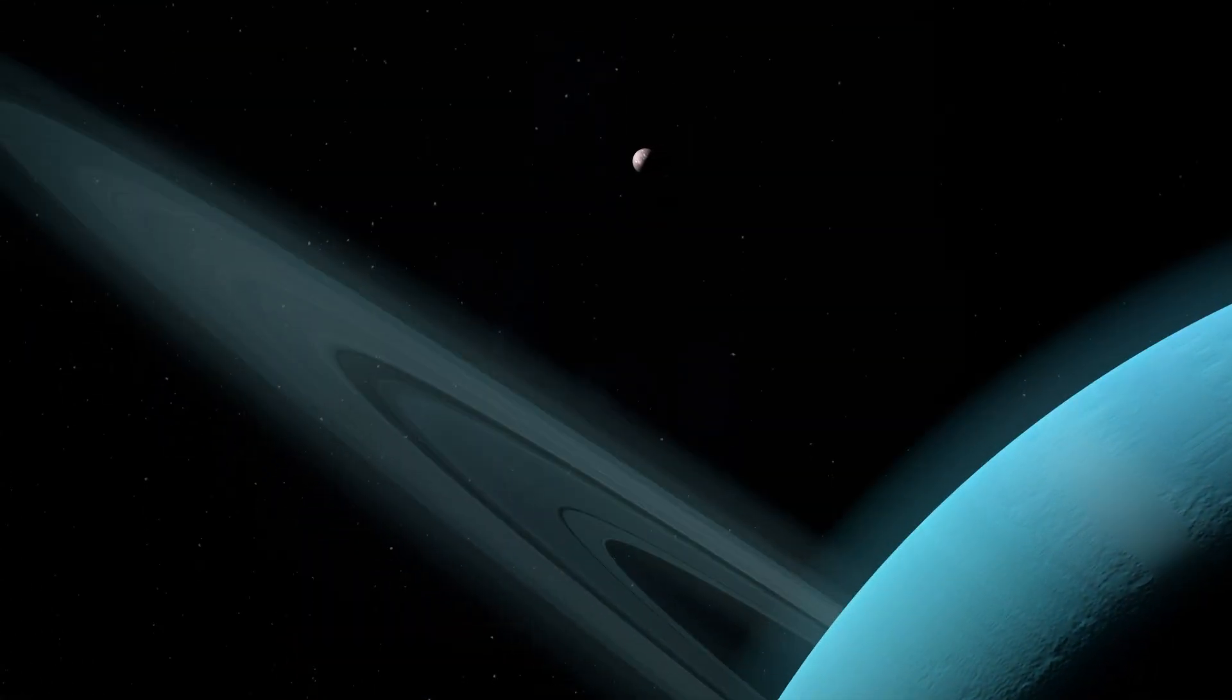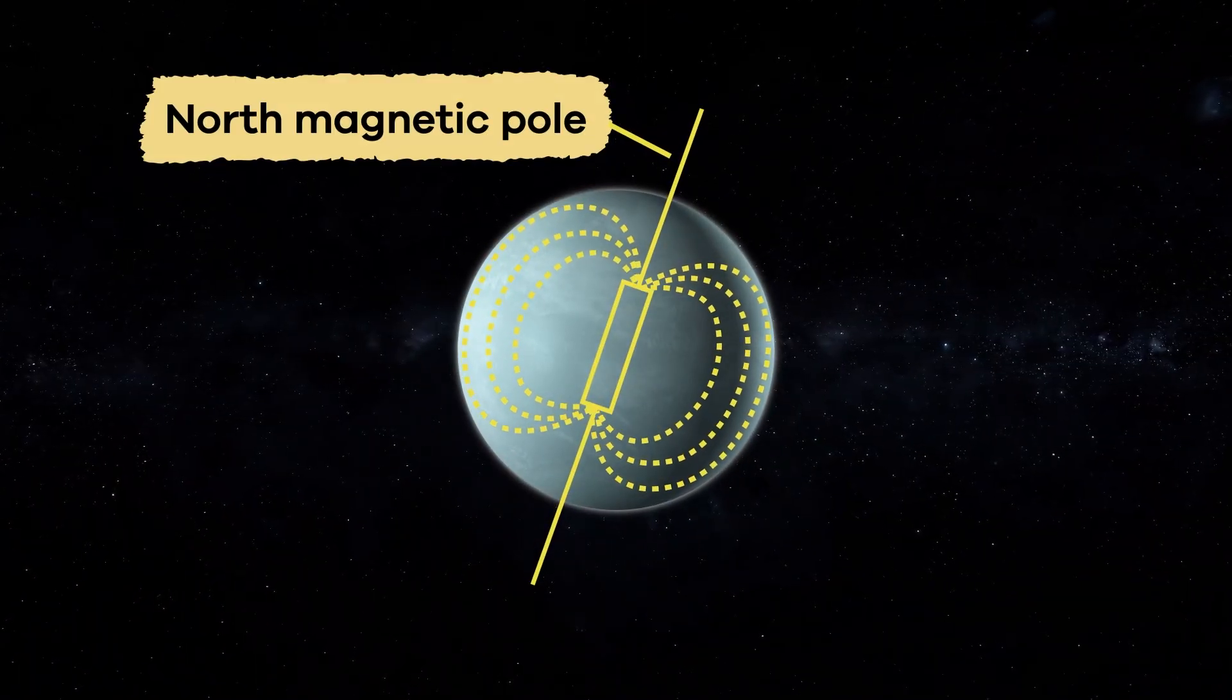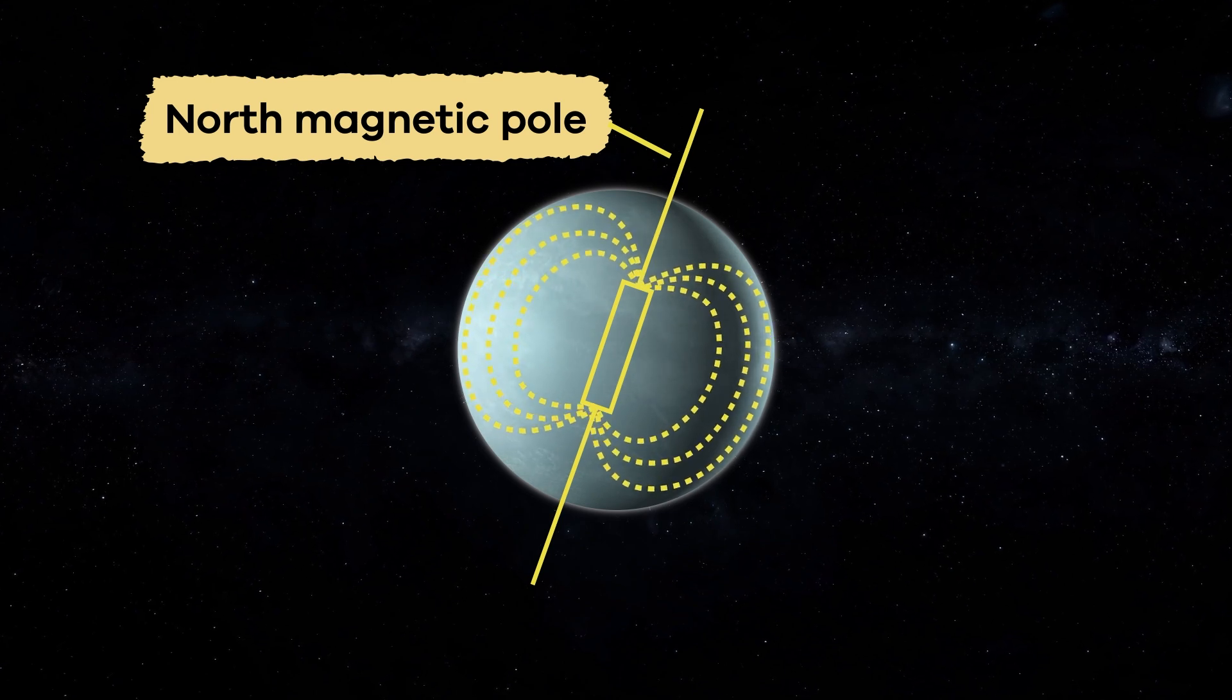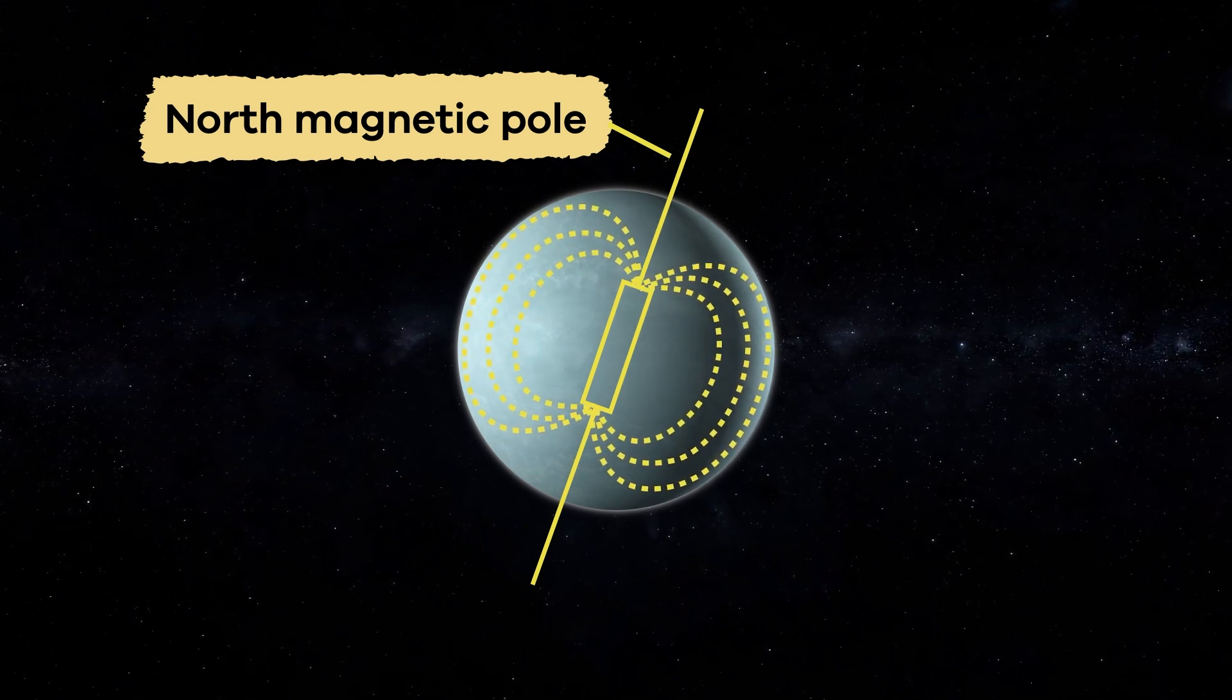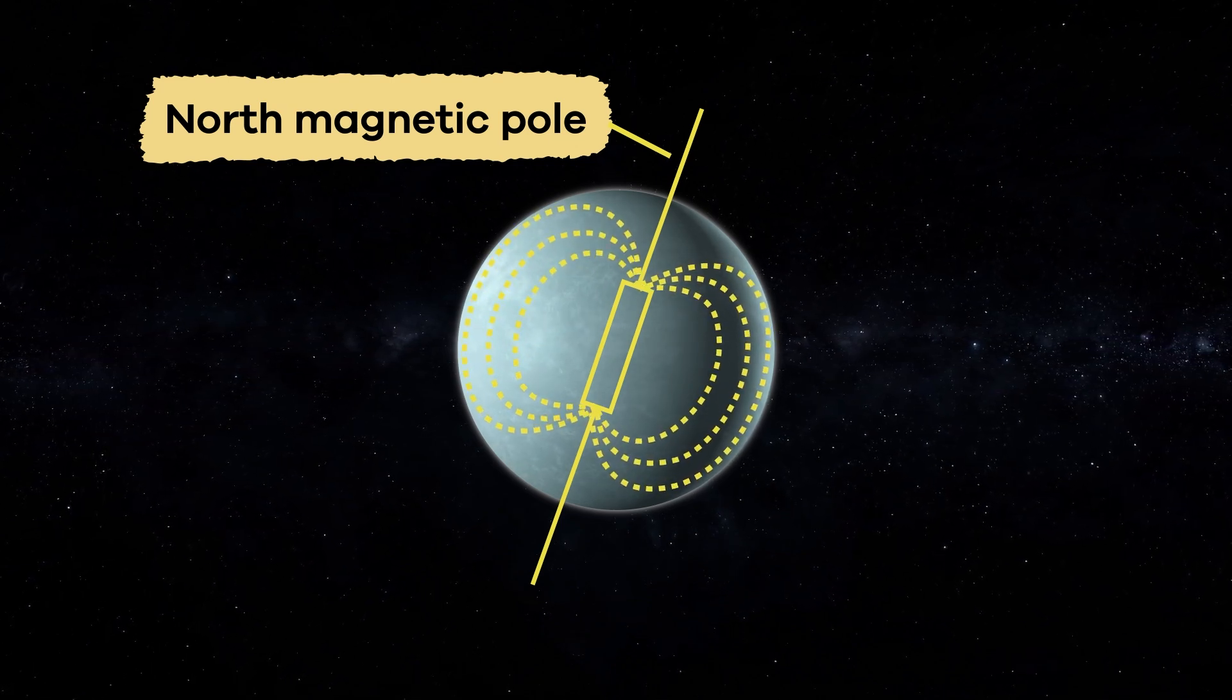Another fascinating element that keeps scientists on their toes is Uranus' magnetic field. Unlike most other planets, whose magnetic fields align with their poles, this planet's magnetic field is tilted and offset from its center. This creates unusual energy and radiation patterns.